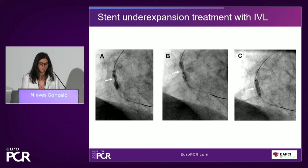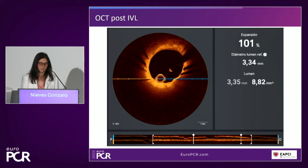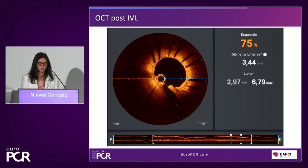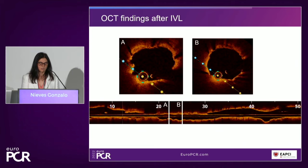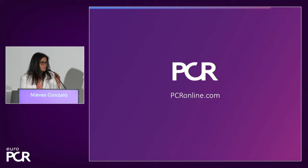In this case, we treated it with shockwave — with IVL — to treat this under-expansion. After the application of 80 pulses, we were able to expand the stent; the balloon looks open. But it's very relevant in these cases to make sure we have achieved a good result and have not left areas of focal under-expansion that can cause problems again. This OCT pullback shows how the stent is now properly expanded. The stent area increased significantly after treatment with IVL. We decided to finish this with a drug-coated balloon. This was the final result.